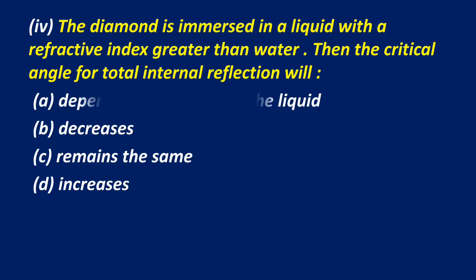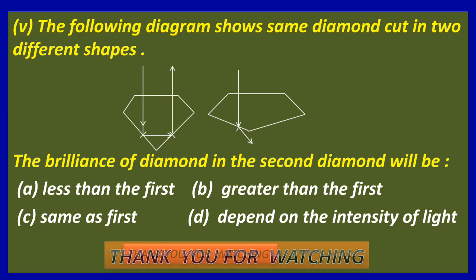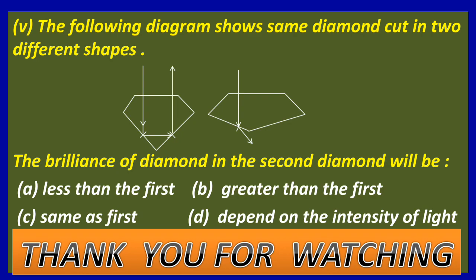Question 4: If the diamond is immersed in a liquid with a refractive index greater than water, the critical angle for total internal reflection will — Option A: depend on the nature of the liquid, Option B: decrease, Option C: remain the same, Option D: increase. The correct answer is D — increases. Question 5: The following diagram shows the same diamond cut in two different shapes. The brilliance of diamond in the second diamond will be Option A — less than the first. That is the correct answer. Thank you for watching this video, do not forget to like, share and subscribe.